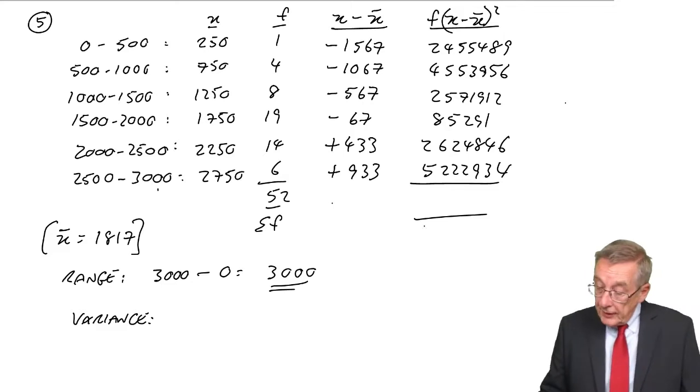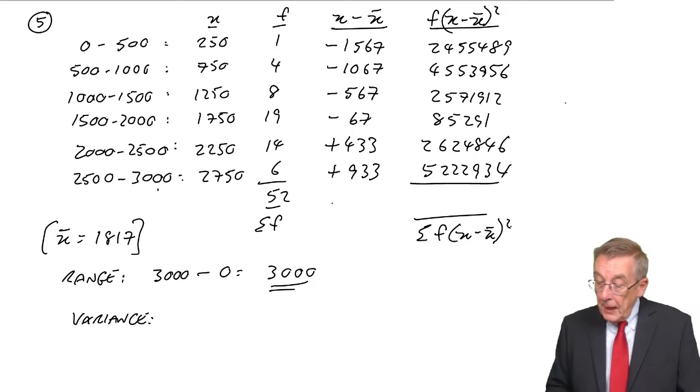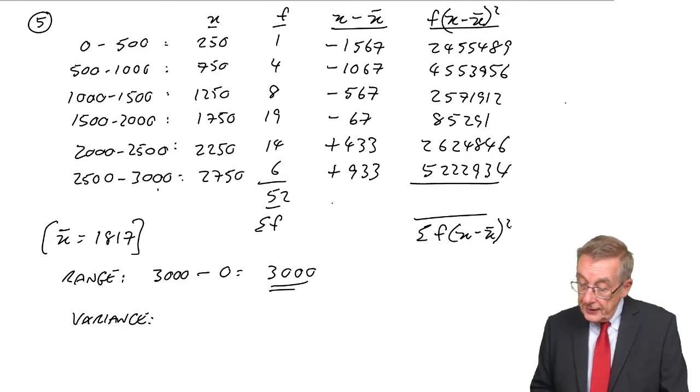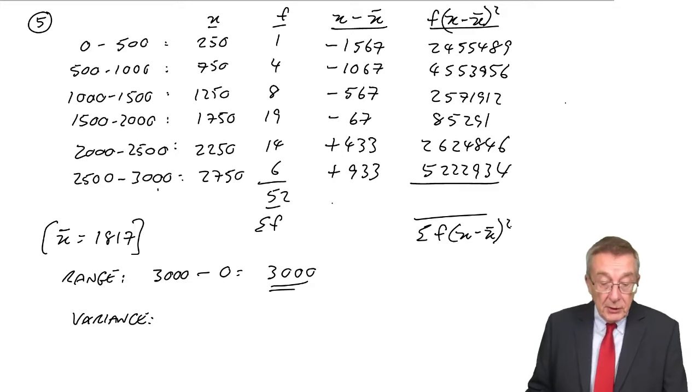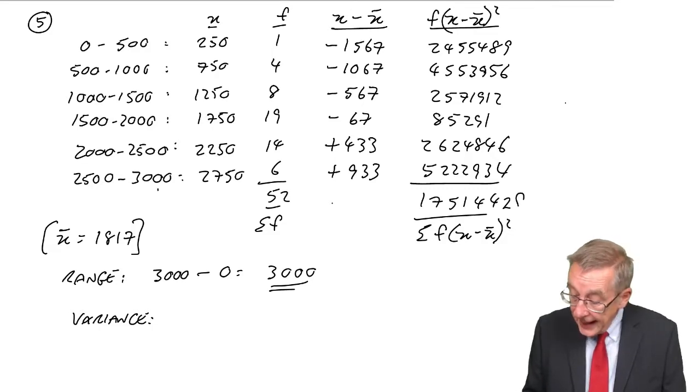And so the total of those are sigma f times x minus x-bar squared. Oh, heavens. 2,455,489 plus 4,554,956, 2,571,912, 85,291, 2,624,846, 5,222,134. I hope I've added these up right. 17,514,428.